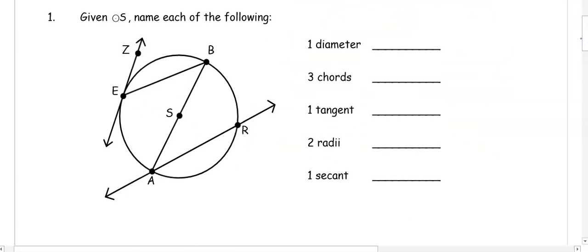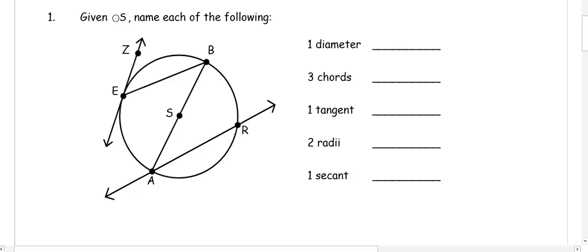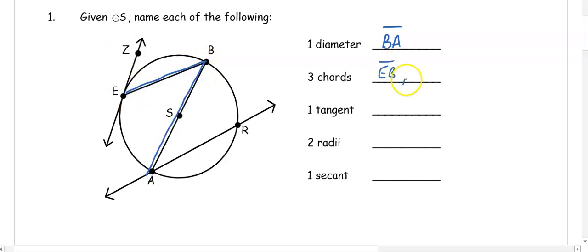Let's use a picture to identify the following. Given circle S, we want to name one diameter. A diameter goes from one side of the circle to the other and passes through the center, so our diameter would be segment BA. For three chords — a chord has two endpoints on the circle — so EB is a chord, BA is a special type of chord because it's the diameter but it's still a chord, and segment RA is also a chord.